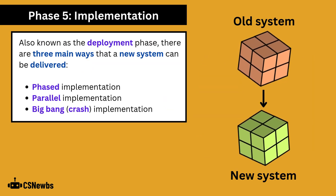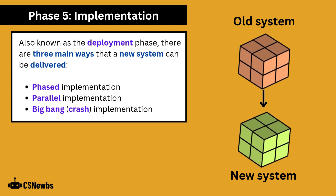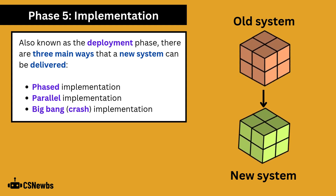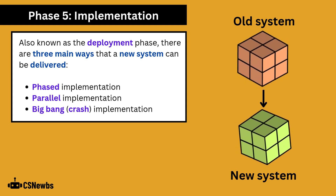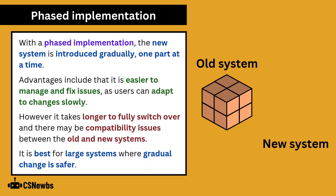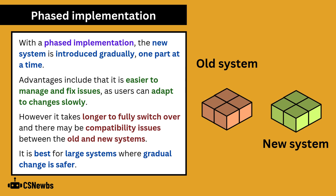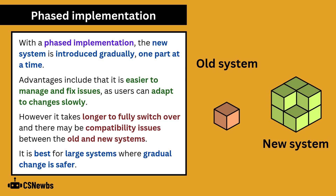Also known as the deployment phase, there are three main ways that a new system can be delivered: phased, parallel, or big bang implementation. With a phased implementation, the new system is introduced gradually, one part at a time. Advantages include being easier to manage and fix issues as users can adapt to changes slowly. However, it takes longer to fully switch over and there may be compatibility issues between the old and new systems. Phased implementation is best for large systems where gradual change is safer.